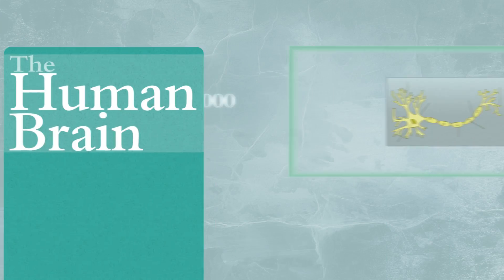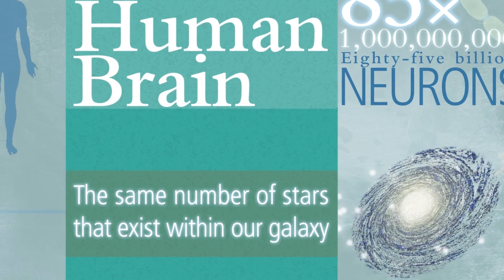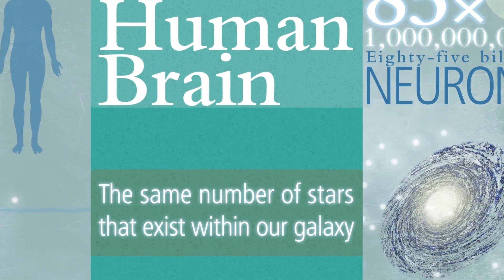The human brain is made of approximately 85 billion neurons, which is roughly the same number of stars that exist within our galaxy.